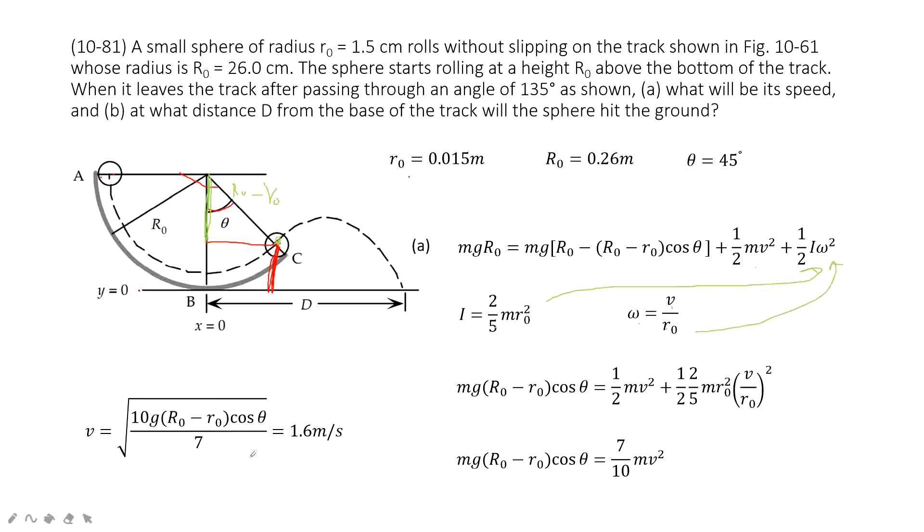You can simplify the function as this one. And then you solve the equation. Get the velocity V at position C, 1.6 meters per second.